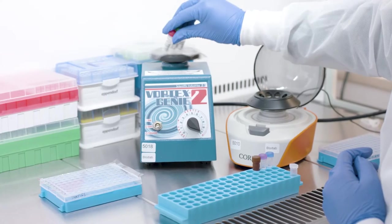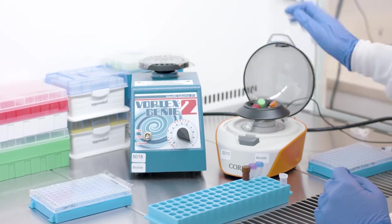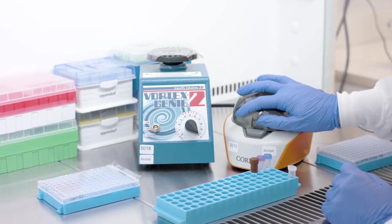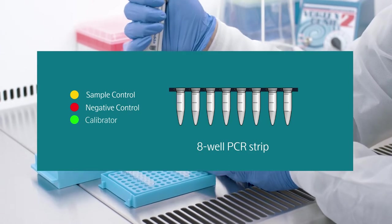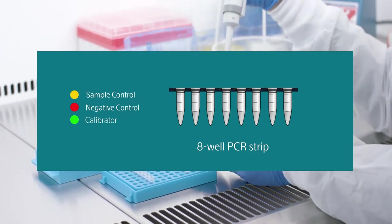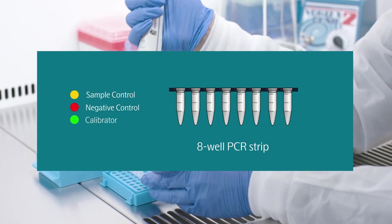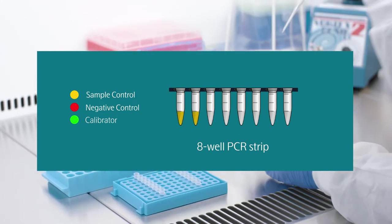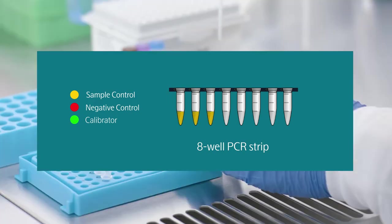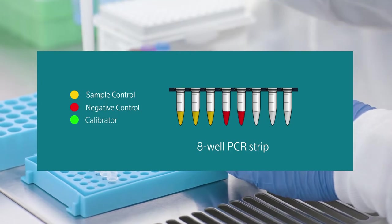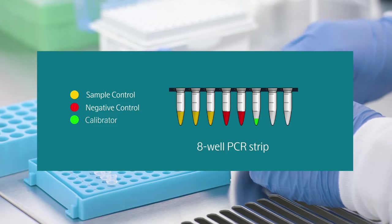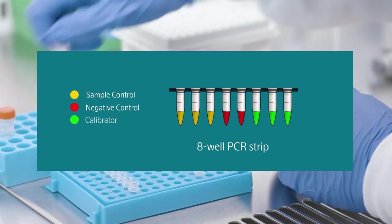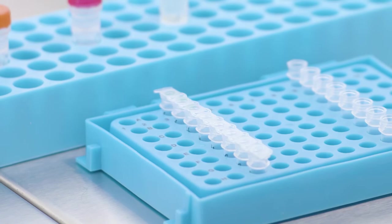Vortex the negative control, the sample control, and the calibrator, and spin them down briefly. Label an eight-well PCR strip with these controls according to the following order. Pipet four microliters of the sample control into the first three wells, four microliters of the negative control into each of the next two wells, and four microliters of the calibrator into the final three wells of the PCR strip. Cover the strip tubes and set that aside.